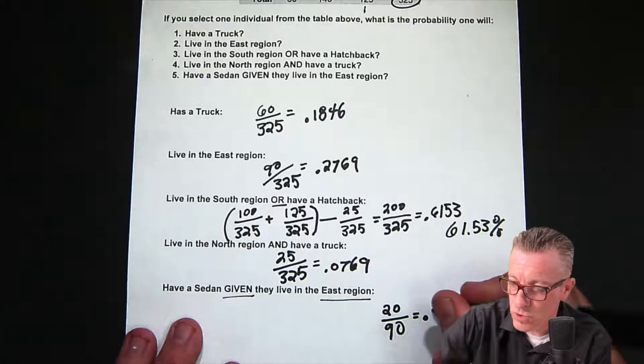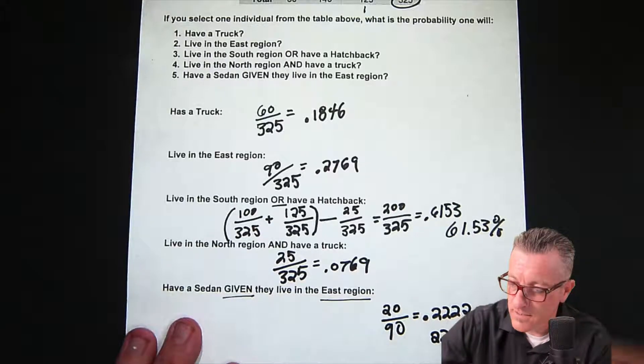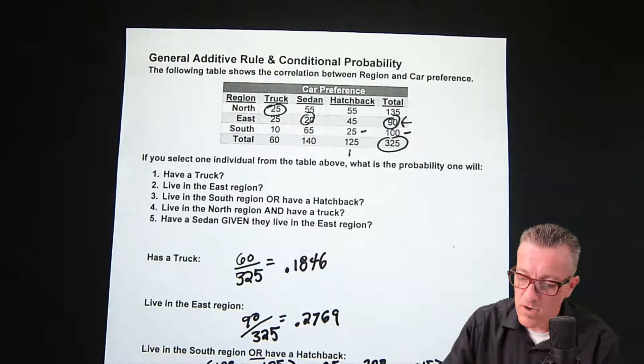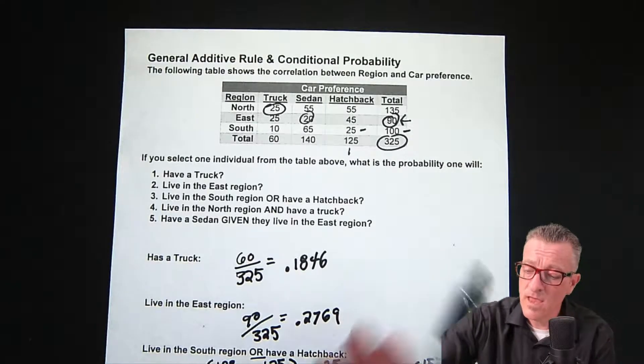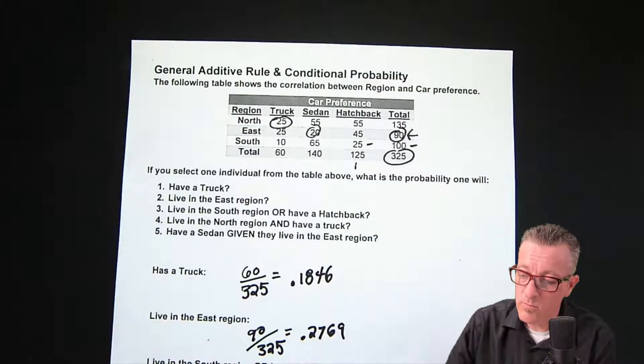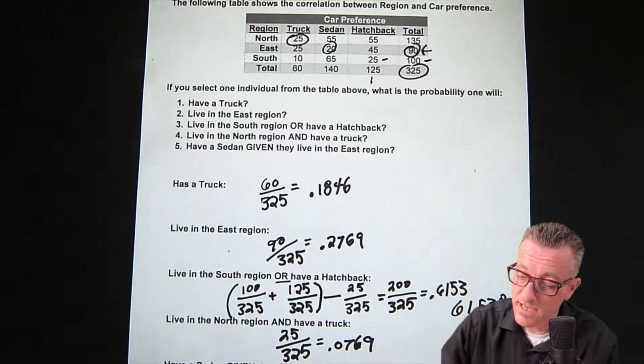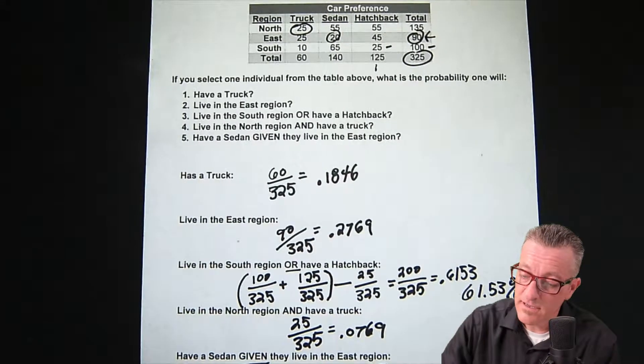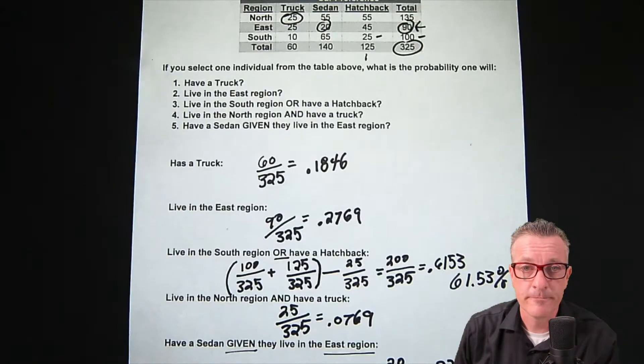That's how to use contingency tables. So the big thing is remember with OR we're looking at the columns and rows and take away the middle otherwise it's double counting. With AND we look at the specific overlap and we use the total. And then with GIVEN we have a restricted sample set, and we use, in this case, the restricted sample set of the East region total as our denominator and our sedan factor within that East region as our numerator and then we end up getting 22.22%. Thank you for watching.